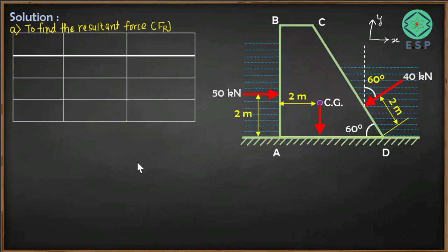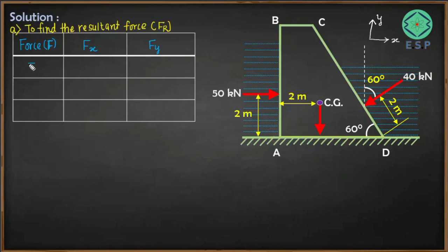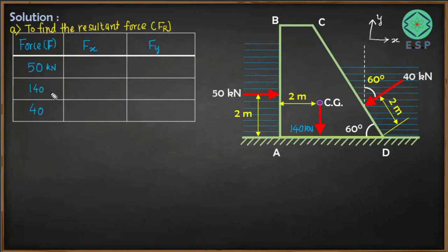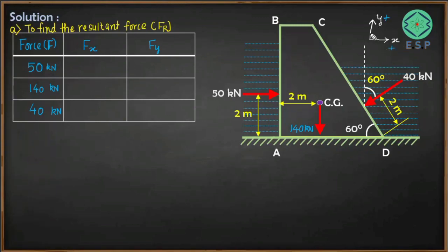The horizontal direction is taken as x and the vertical as y. We list each force with its x and y components. Sign convention: rightward is positive, leftward is negative; upward is positive, downward is negative. The 50 kN force is already in the x direction acting towards right, so it is positive.